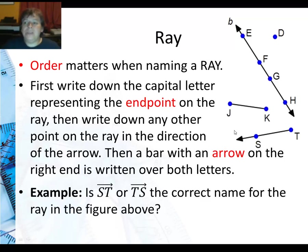So we always start with the endpoint and then the direction point. Then we have the bar and the arrow. The arrow's always over the right. So for this ray here, is ST or TS the correct name for the ray in the figure above? And I would say that it is TS because we have to start with the endpoint. I know it's on the right here, but that's where the ray starts.